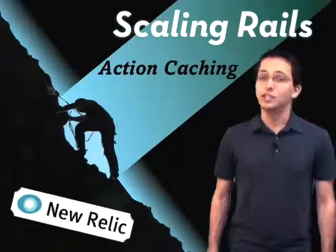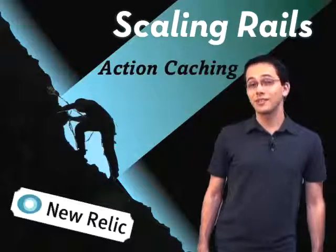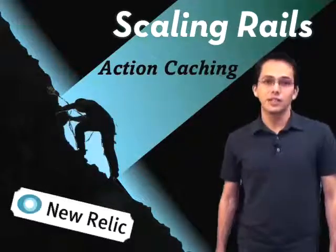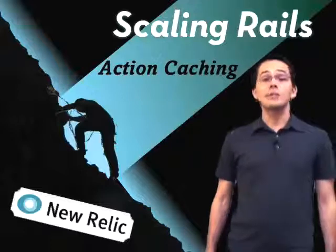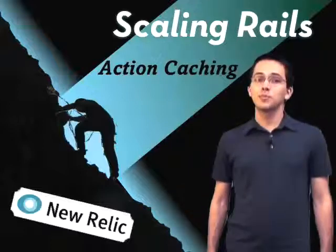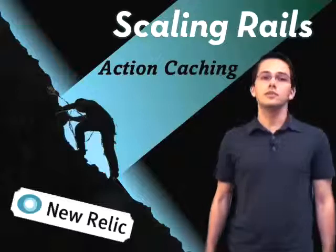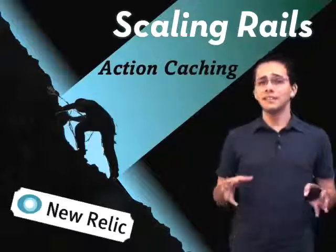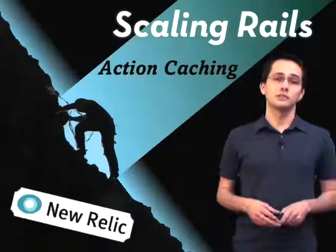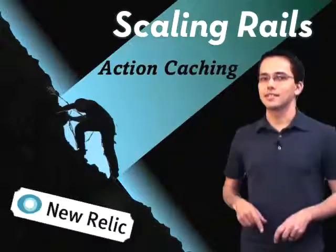Hello, I'm Greg Pollack, and you're watching the sixth episode of the Scaling Rails screencast series, supported by New Relic. New Relic has an RPM service, and RPM Lite is a free, fully supported version that you and your whole team can use for an unlimited time and unlimited number of hosts to monitor your Rails performance. If you haven't checked it out, now's the time.